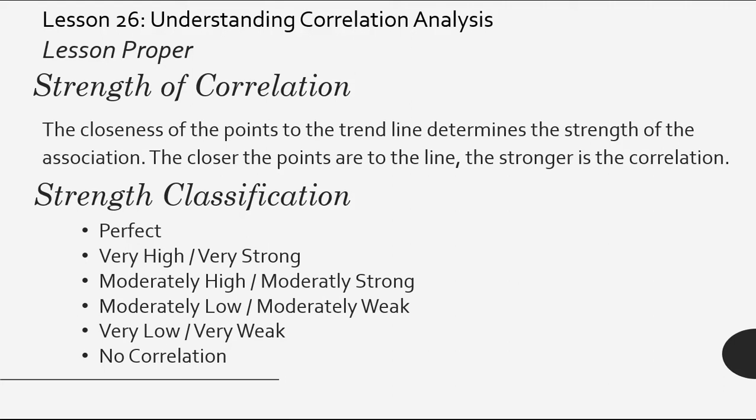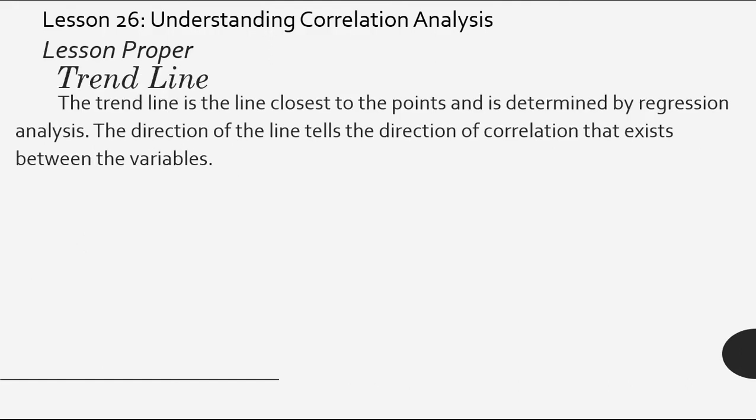What are the classifications of the strength of correlation? We have six: we have perfect, very high or very strong, moderately high or moderately strong, moderately low or moderately weak, very low or very weak, or no correlation at all. So we have six strength classifications. How will we know? Actually, you don't need to memorize it word for word. You just need to visualize it based on its appearance.